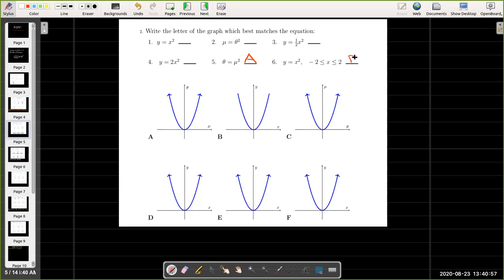Equation 6 we already matched with graph B. In graph C then mu is the dependent variable. So that gets matched with equation 2. But we still have three graphs where knowing the dependent variable and the independent variable is just simply not enough information.